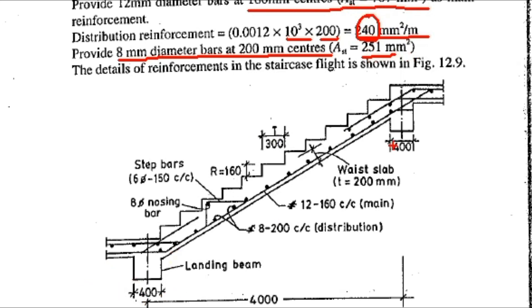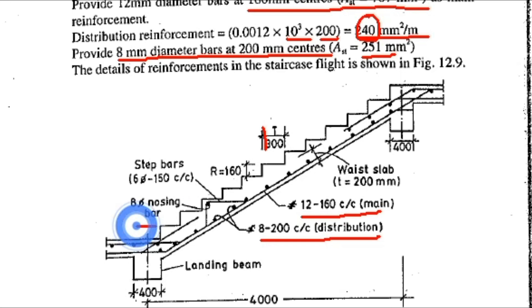This is the structural diagram of the waist slab staircase. Main reinforcement is 12 mm diameter bars at 160 mm centre to centre, and distribution bars are 8 mm diameter at 200 mm centre to centre. Tread is 300 mm and riser is 160 mm. Step bars are 6 mm diameter at 150 mm centre to centre, and nosing bars are also provided. The landing beam width is 400 mm and total span length is 4000 mm.